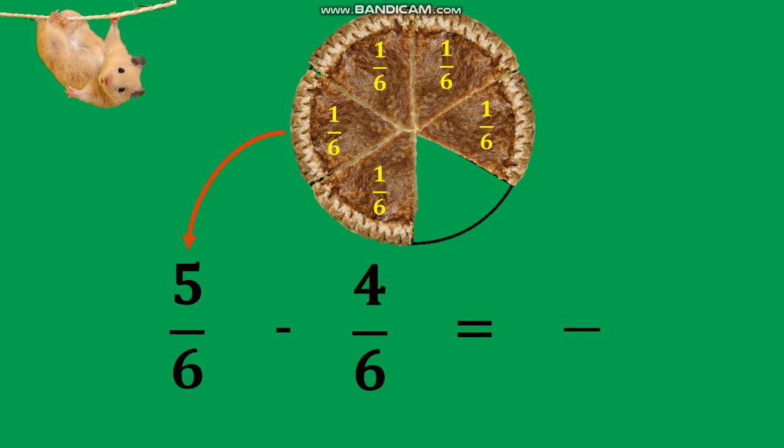Subtraction of like fractions is done similarly. Let us subtract 4 sixths from 5 sixths. Subtract the numerators: 5 minus 4 equals 1, and copy the common denominator 6, giving a difference of 1 sixth.